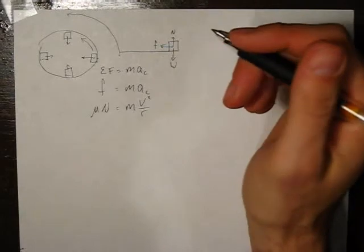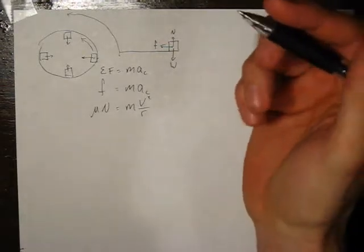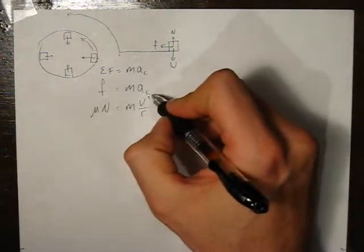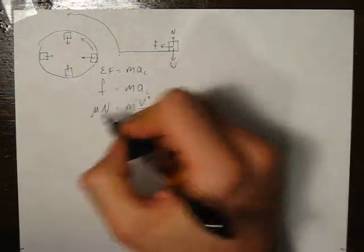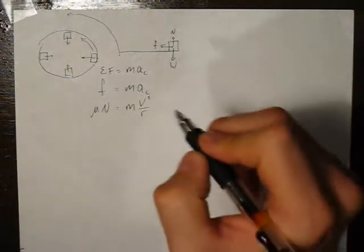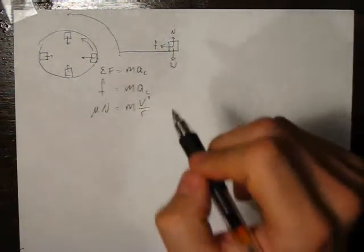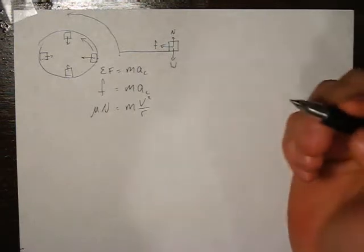So it would have to go a further distance in the same amount of time, meaning it's going faster. So there's a relationship between the speed and the friction that is needed to keep it stationary, to keep it at rest on the moving top so that it doesn't slide off.